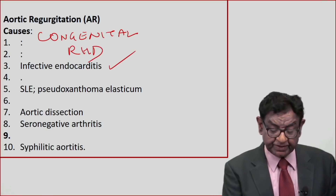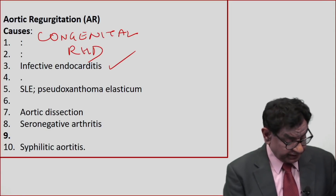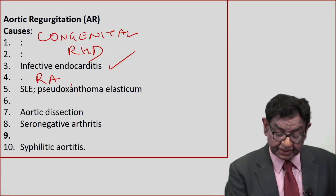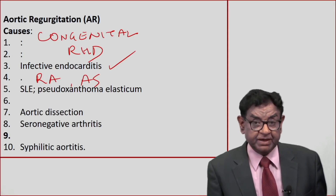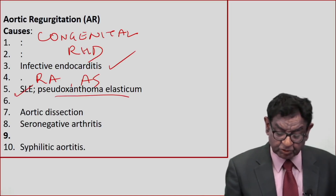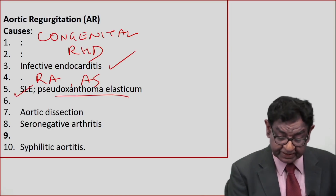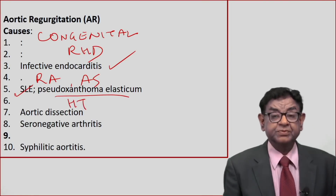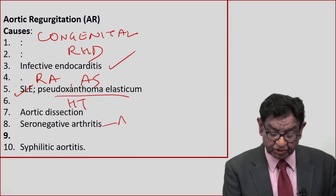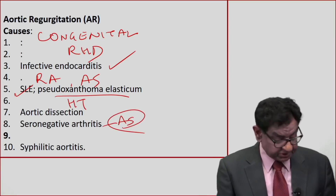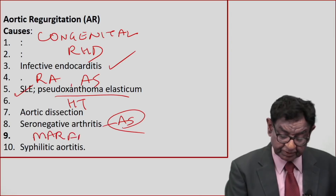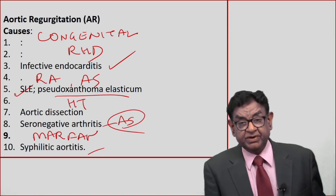It can occur in infective endocarditis, rheumatoid arthritis, and ankylosing spondylitis — that means it may occur in many connective tissue disorders like SLE and Pseudoxanthoma elasticum. It can occur in severe hypertension, aortic dissection, seronegative arthritis, Marfan syndrome, and syphilitic aortitis.